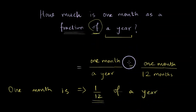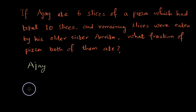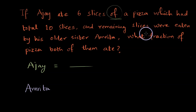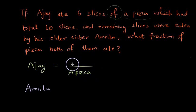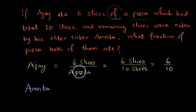Now let's solve one more worded problem. Ajay ate six slices of a pizza which had 10 slices total, and the remaining slices were eaten by his older sister Amrita. What fraction of the pizza did each of them eat? For Ajay: the word 'of' tells us a whole pizza goes in the denominator, which equals 10 slices. He ate six slices, so the fraction is 6 slices divided by 10 slices, giving us 6 over 10.